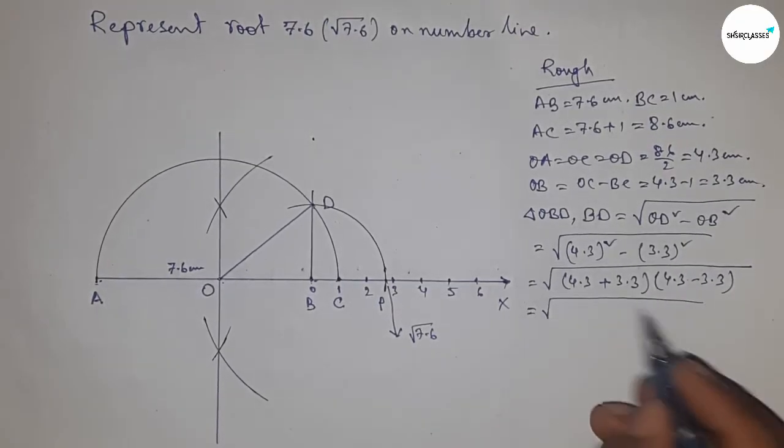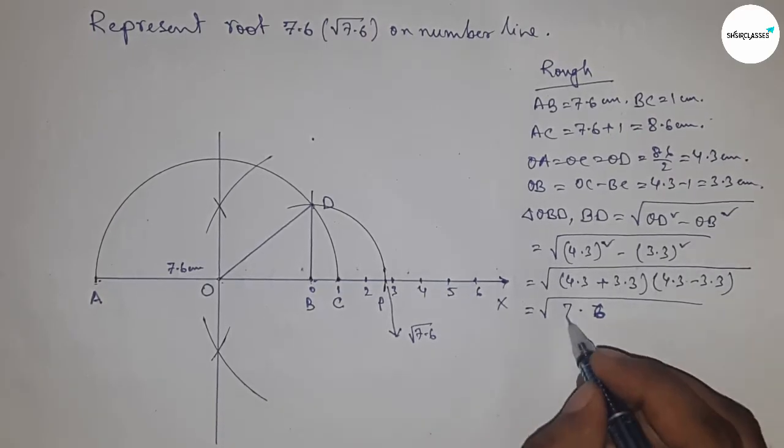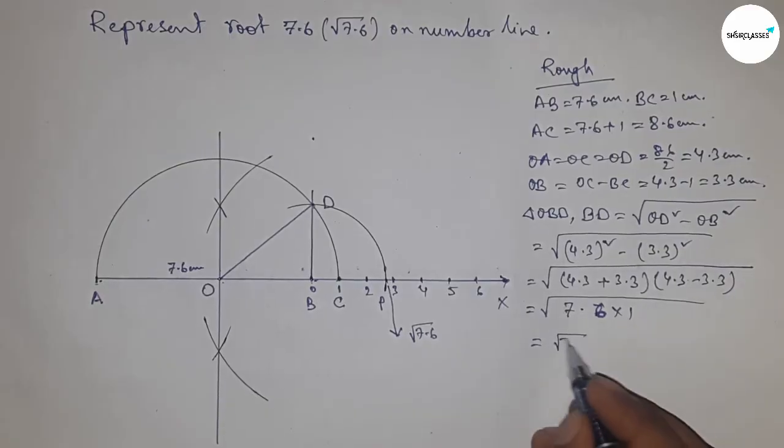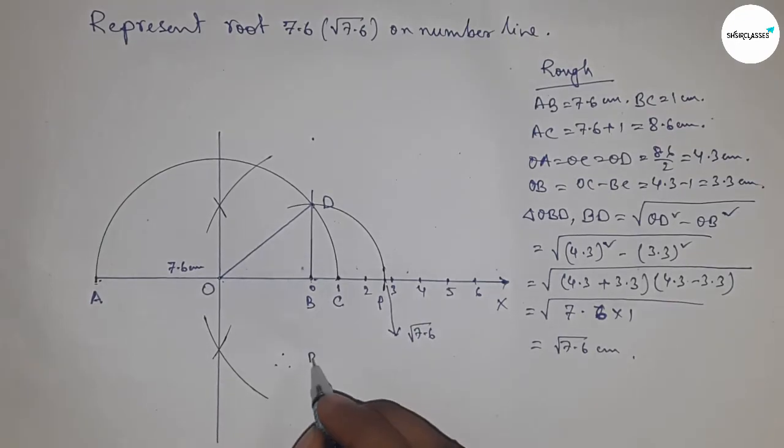From these calculations, this is 7.6 into 1, so this is root 7.6 centimeter. Therefore, distance BD and BP are equal to root 7.6 centimeter.